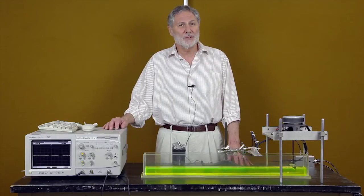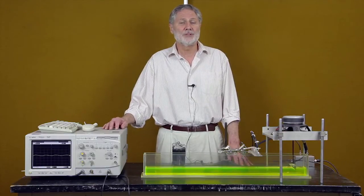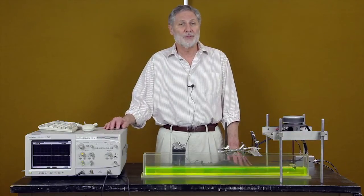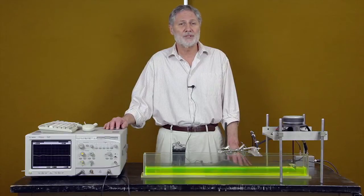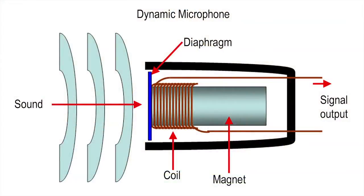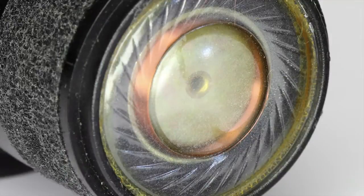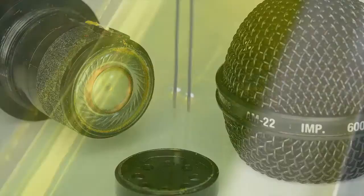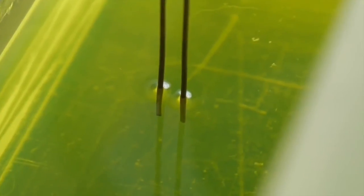I would like to show you a demonstration that we do in a course on transduction. Transducers convert energy from one form to another and are essential for measuring and driving physical systems. For example, a microphone converts acoustic energy to electric energy so that we can measure or record a sound wave. The transducer in the demonstration is a good visual example that can be readily understood. It also presents problems that must be overcome, which is nearly always the case in transduction.